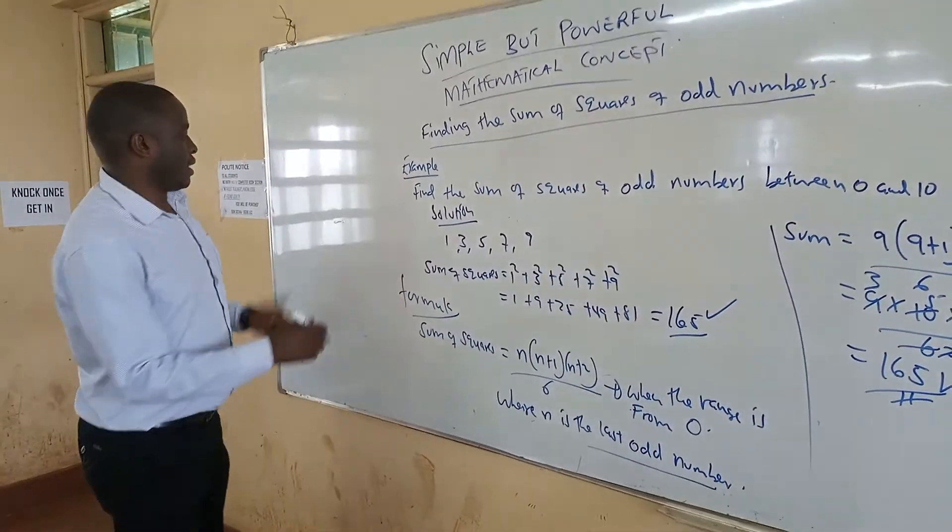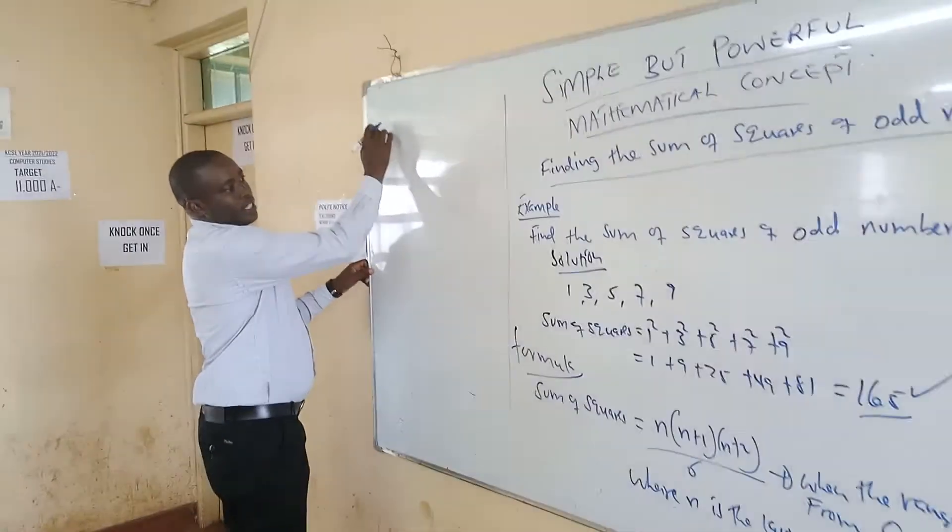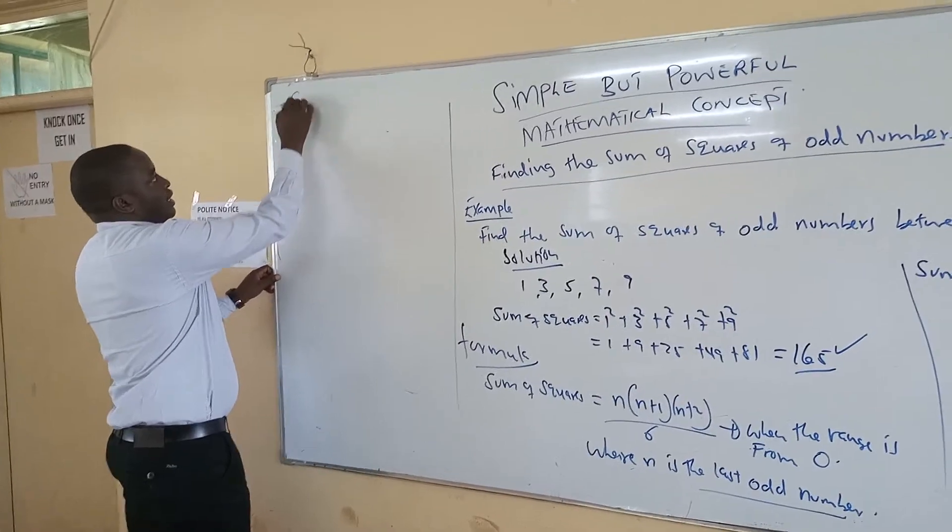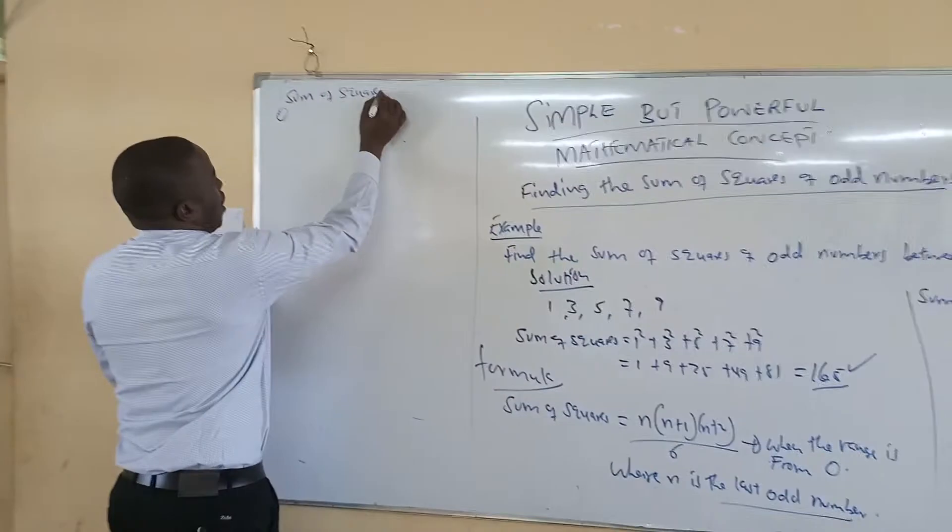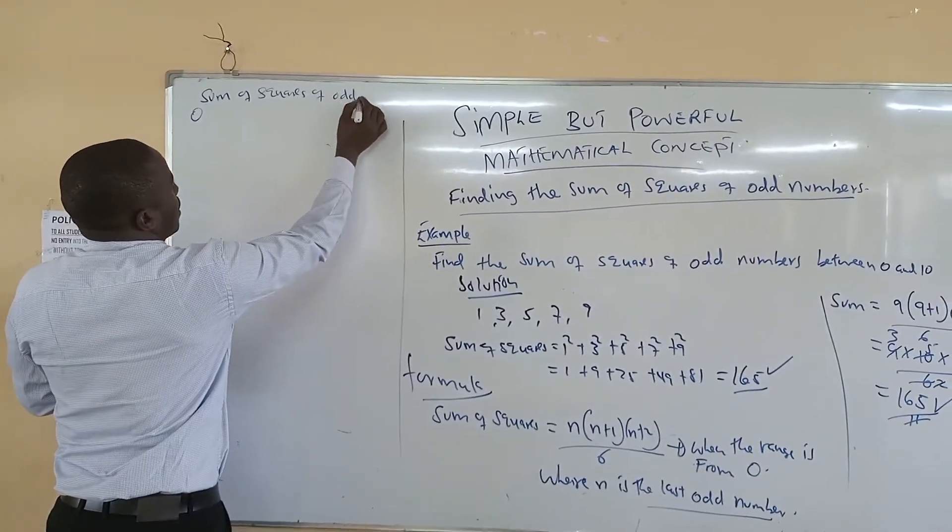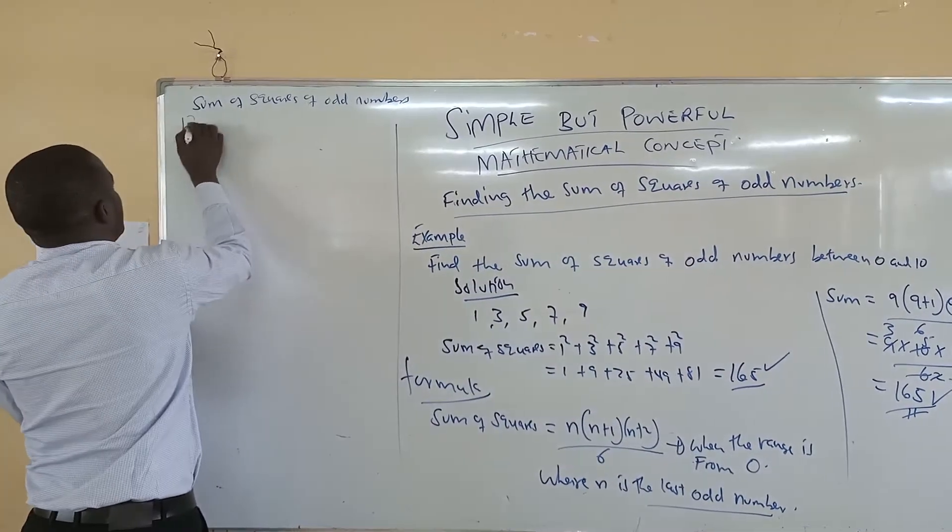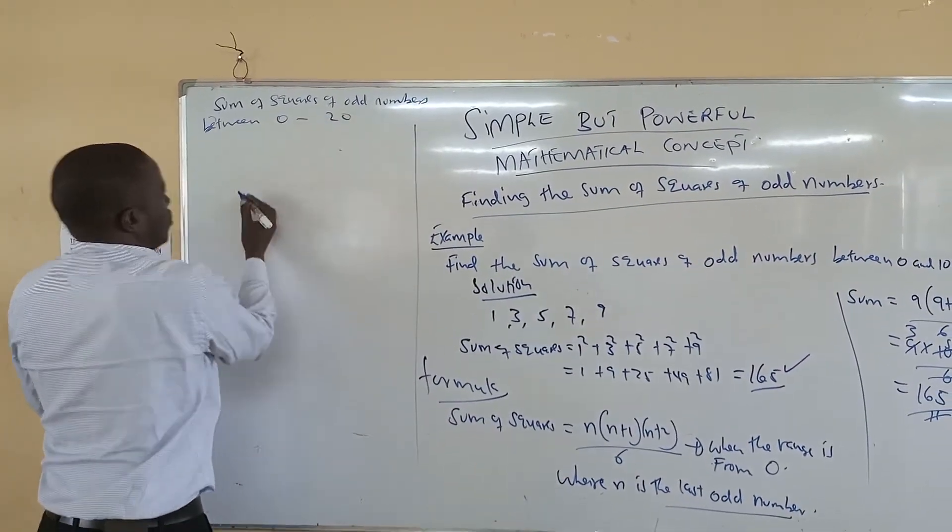Another example, let's do another example to prove the same. Let us do the sum of squares of odd numbers between 0 and 20.